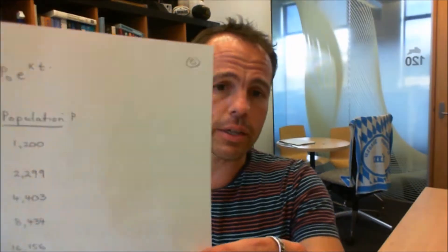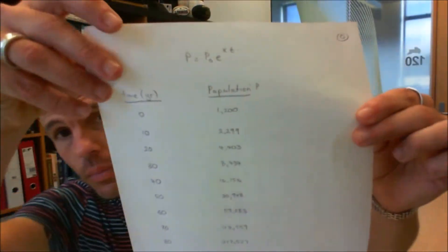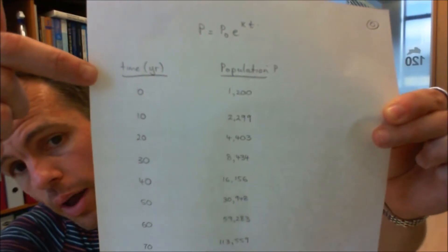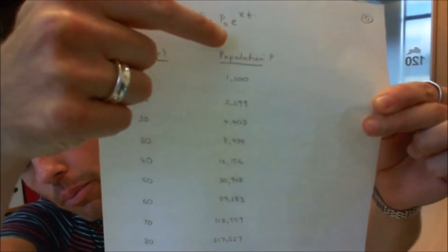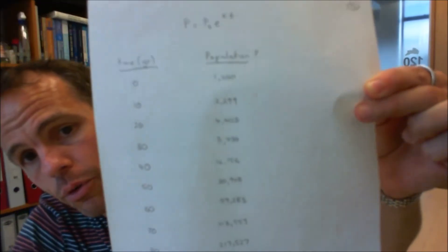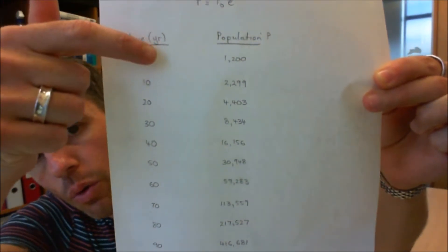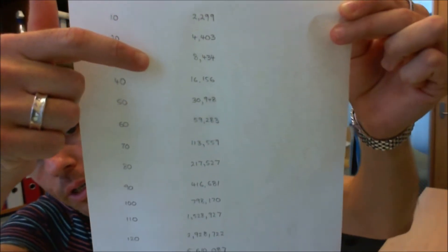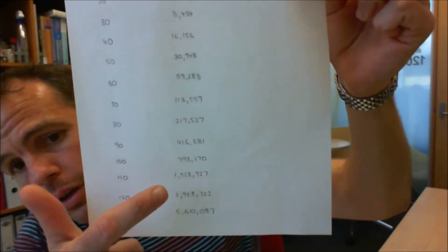So you might have a data set that looks a little bit like this. You measure time in years and population in number of people. You start out with 1200 people, and that population grows — eventually quite large. After 130 years we've got 5.6 million people.